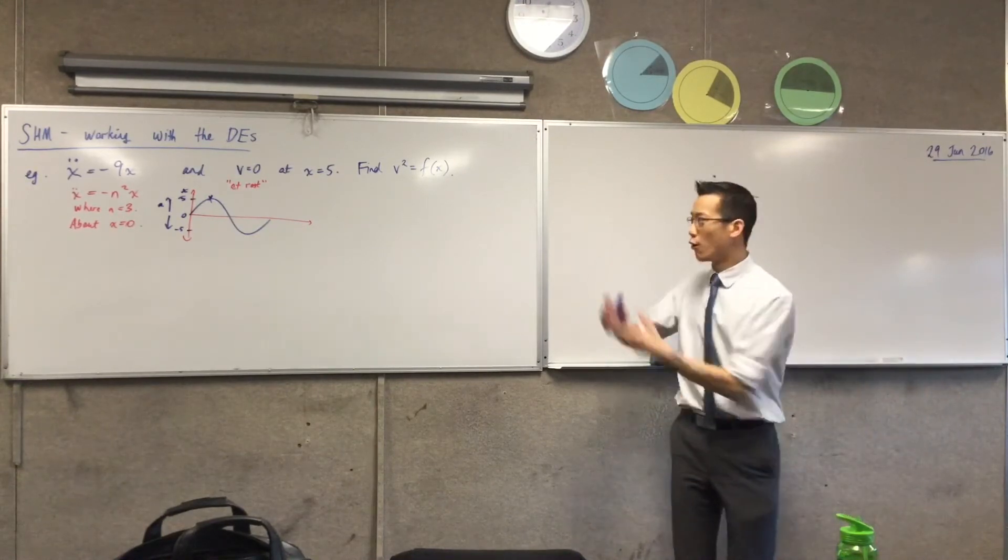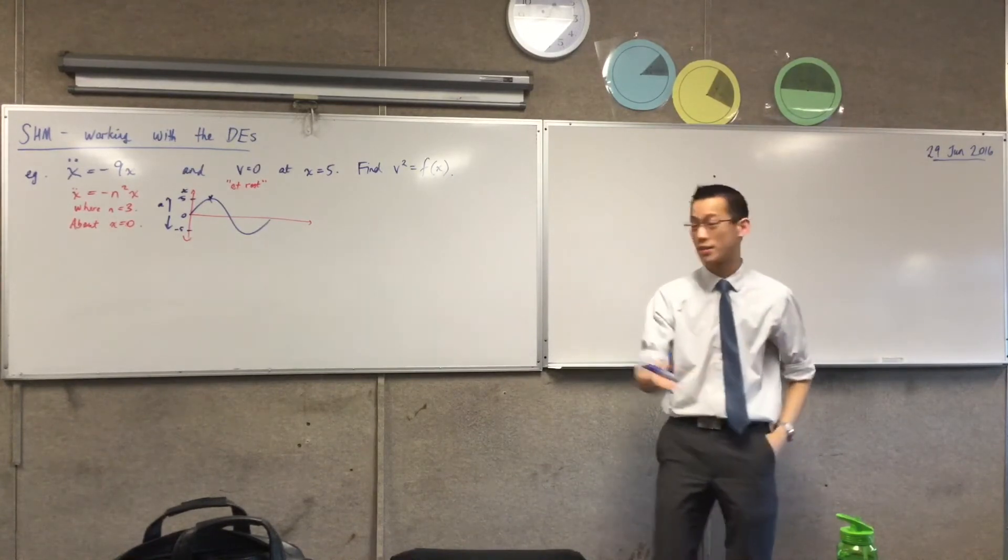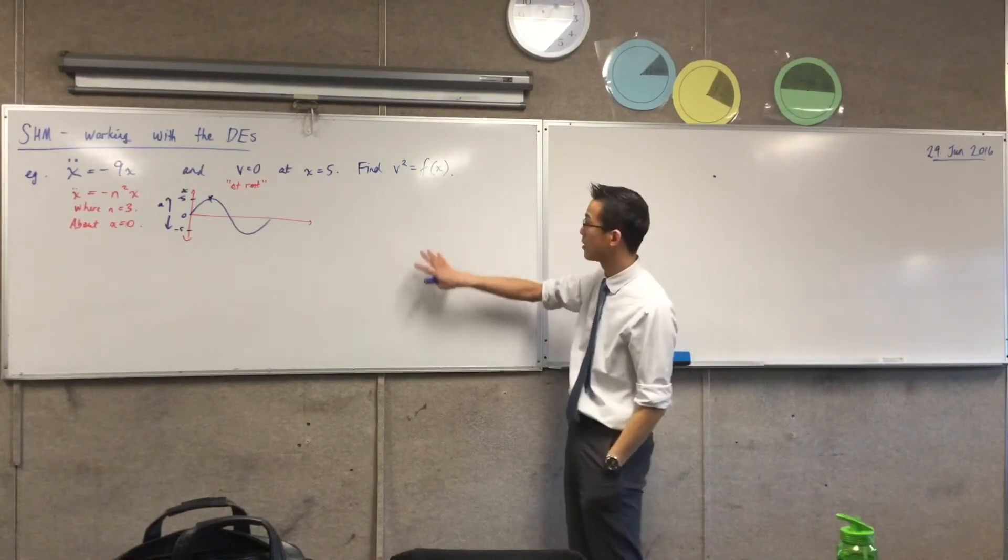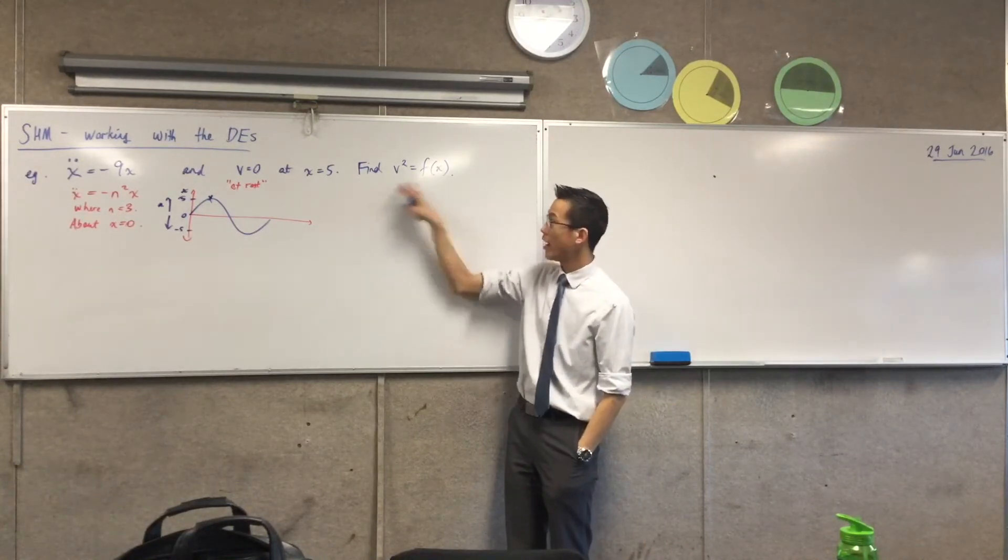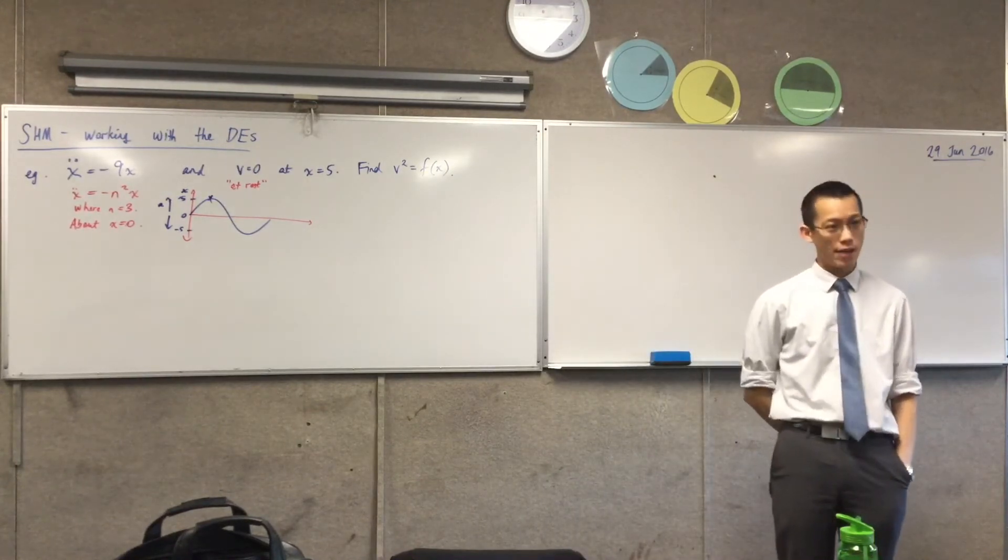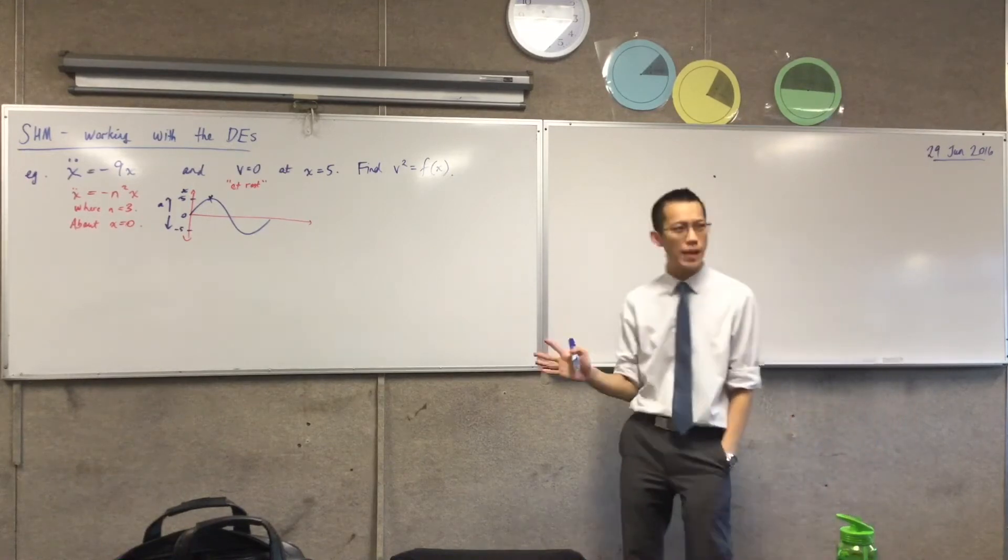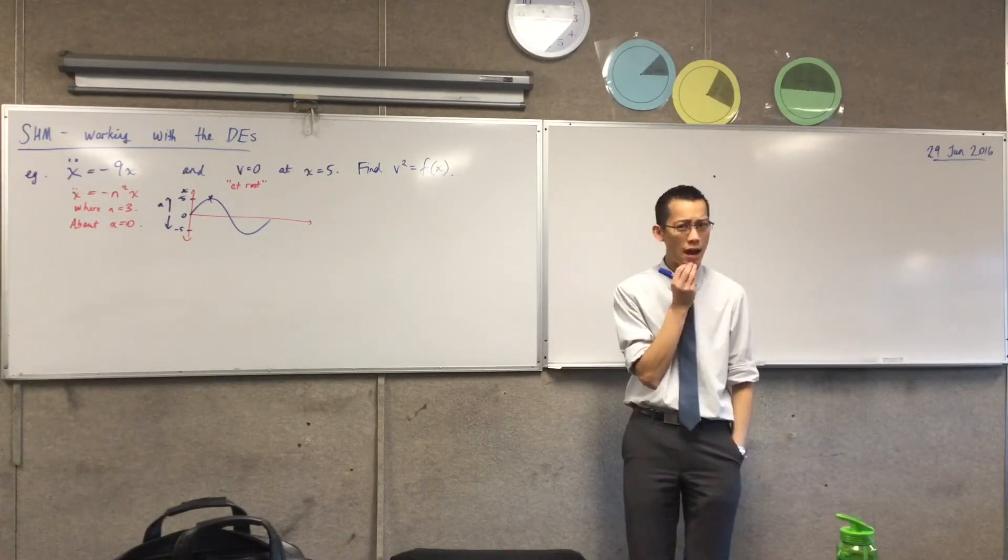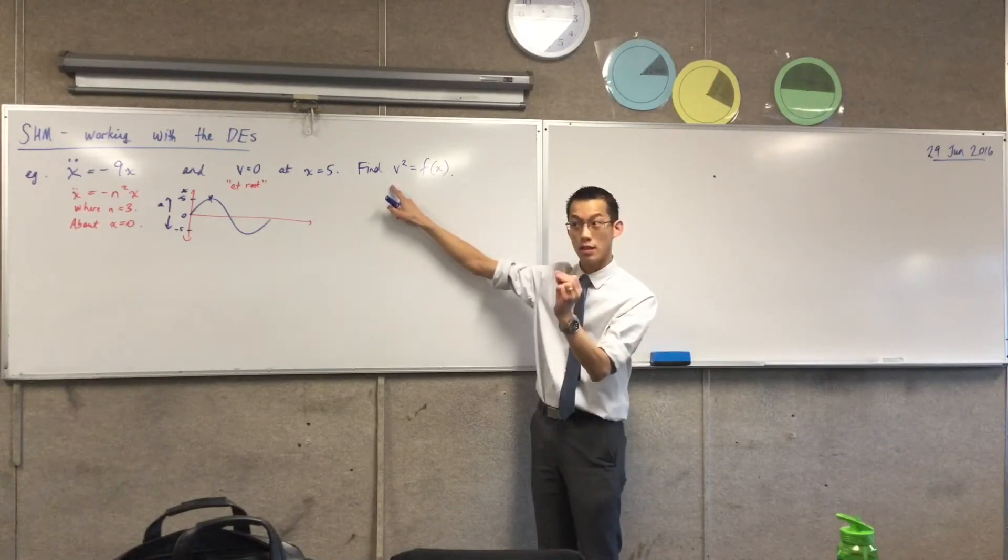And I want you to get in the habit of thinking before writing, think before writing, because that guides the writing that you will then do. It gives you the most efficient path. Now that I've got all of this background, now I can have a go at this question. It says, find v squared as a function of x.